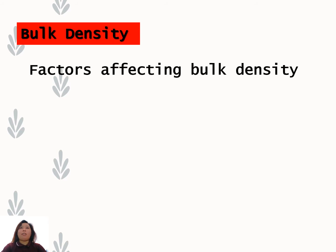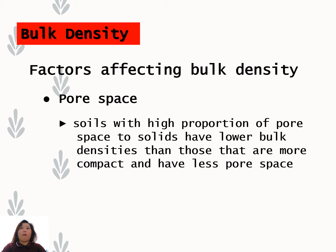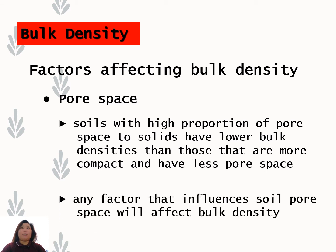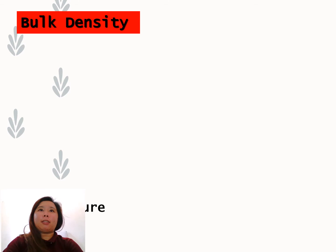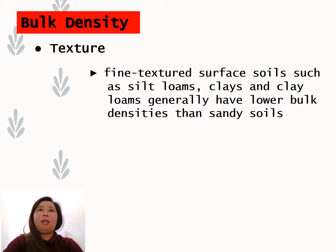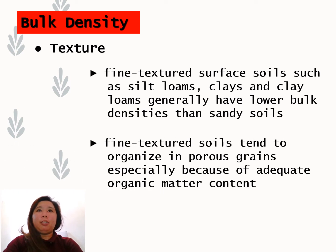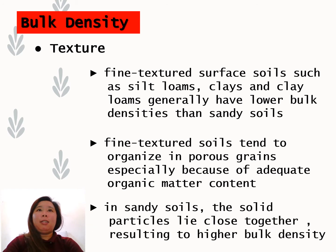There are different factors affecting soil bulk density. One is pore space: soils with a high proportion of pore space to solids have lower bulk densities than those that are more compact and have less pore space. Any factor that influences soil pore space will affect bulk density. Another factor is soil texture: fine-textured surface soils such as silt loams, clay, and clay loams generally have lower bulk densities than sandy soils, because fine-textured soils tend to organize into porous aggregates, especially with adequate organic matter. In sandy soils, solid particles lie close together, resulting in higher bulk density.